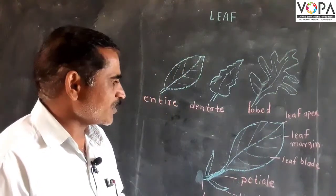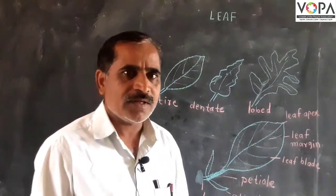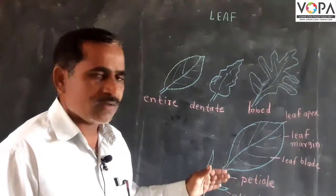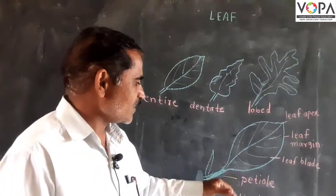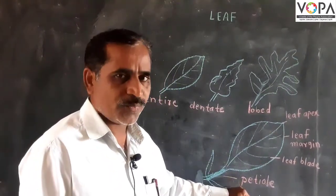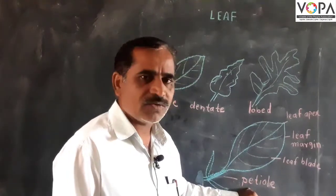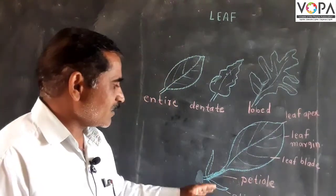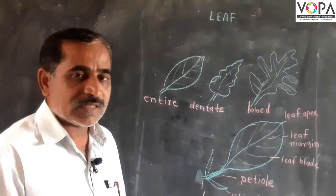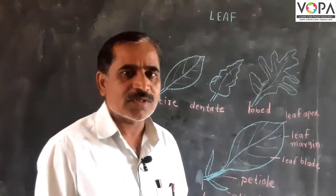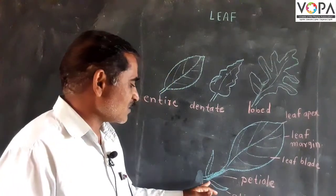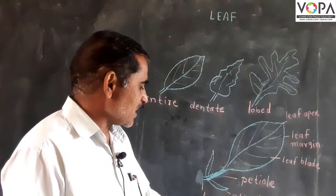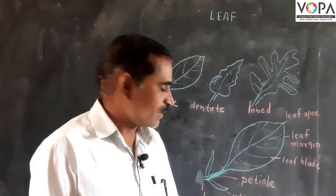The stalk of the leaf in some plants is called the petiole. Some plants do not have a petiole, and the leaf is attached directly to the stem — this place is called the leaf base.